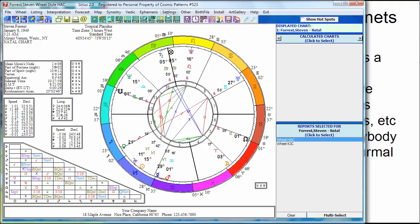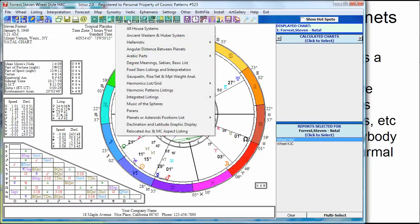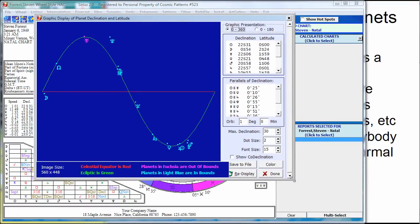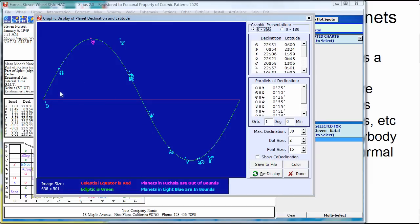I've got up here in the Sirius 2.0 software the birth chart of astrologer Stephen Forrest. And I'm going to click on listing and the declination and latitude graphic display. And I'm just going to enlarge this a little bit. And this is a diagram that shows how far the planets are from the celestial equator. This distance from the celestial equator tells me down here that the red line is the celestial equator. This is the declination.